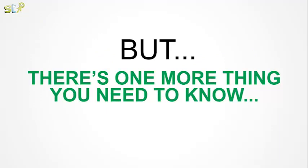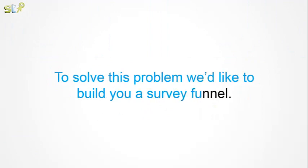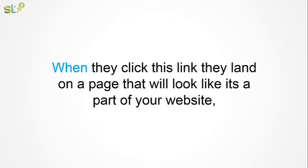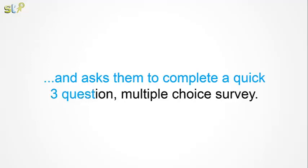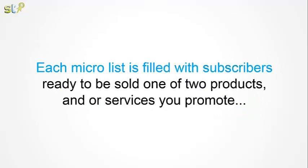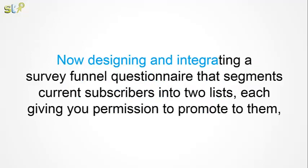But there's one more thing you need to know — that's how to separate subscribers from your main subscriber list into micro-segments before sending them promotional emails. To solve this problem, we'd like to build you a survey funnel. Once built, we will give you a link to share with your subscribers. When they click this link, they land on a page that will look like it's a part of your website and asks them to complete a quick three-question multiple-choice survey. Our survey funnel software automatically adds each subscriber to one of two list segments that we integrate into the survey funnel for you. Each micro-list is filled with subscribers ready to be sold one of two products and or services you promote. Our survey funnel will know by the answers they give what list to place them in.